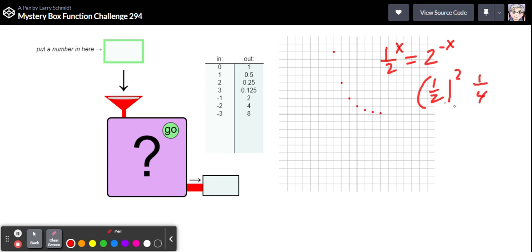If we put in a negative number there, so (1/2) to the, let's say negative two. Well the negative is going to flip this around so we get 2/1 and then we square it. That should give us four and look at this, the negative two gives us four.